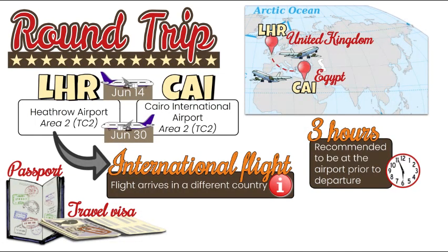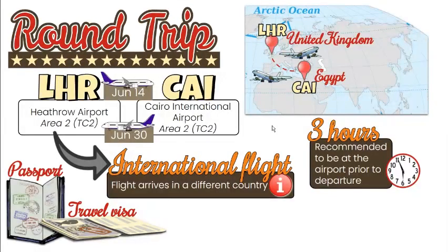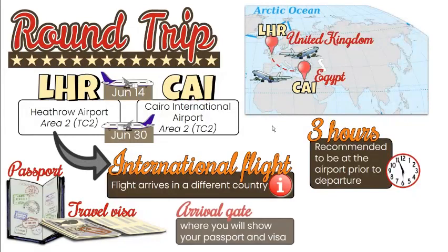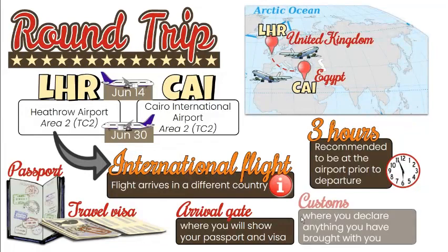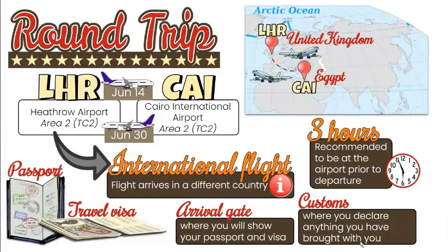When you arrive at the destination, you may be asked to fill out an arrival card — evidence of where you are coming from, where you're staying, where you're going during your stay, and who is going to be with you. For an international flight, you also have to go through the arrival gate and customs. The arrival gate is where you show your passport and visa to the border agent, and customs is where you declare anything you have brought with you.